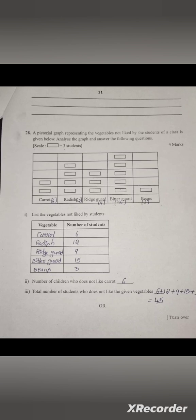A pictorial graph represents the vegetables not liked by students of the class. Analyze the graph and answer the questions. One diagram indicates 3 students. Carrot: 6 members, Radish: 12 members, Ridge gourd: 9 members, Bitter gourd: 15 members, Beans: 3 members. Make a list of vegetables and number of children who does not like carrots. You will get 45. How many cubes, cuboids, cylinders, cones are there in this diagram?